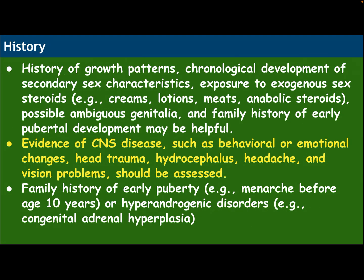History taking should include history of growth pattern, chronological development of the secondary sex characteristics, and exposure to exogenous sex steroids such as black creams, lotions, meats, and anabolic steroids. Possible ambiguous genitalia and family history of early pubertal development may be helpful. Evidence of CNS disease such as behavioral or emotional changes, head trauma, hydrocephalus, headache, and vision problems should be assessed. Family history of early puberty, menarche before the age of 10 years, or hyperandrogenic disorders like congenital adrenal hyperplasia should also be noted.